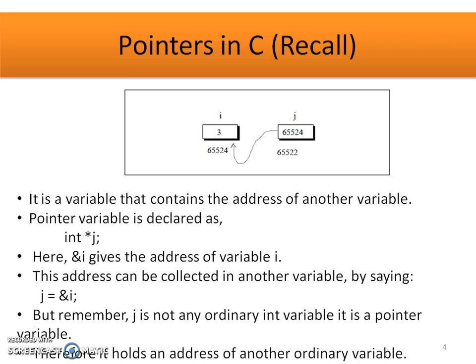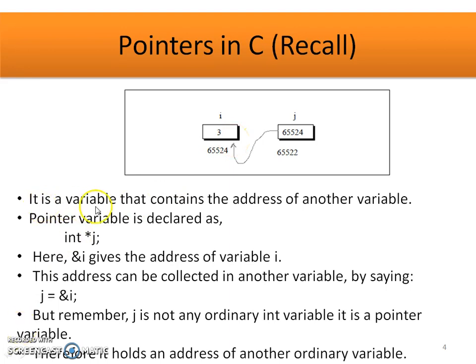Before starting Pointer to 1D Arrays, we will recollect the concept of Pointers in C. The diagram explains two variable declarations. The first variable is i, declared with the value 3 assigned to it. J is another variable holding some address location, so obviously j must be a Pointer type variable which is pointing to the address location 65524. It is a variable that contains the address of another variable.